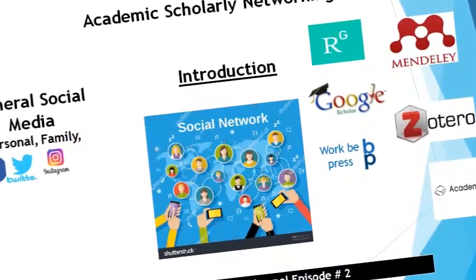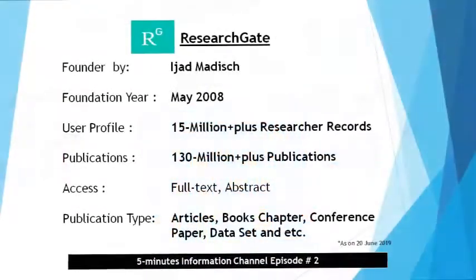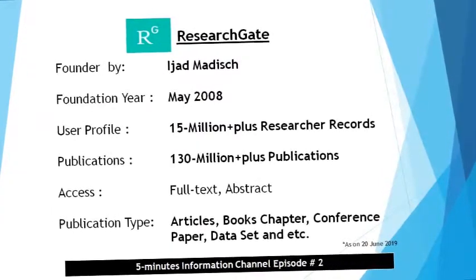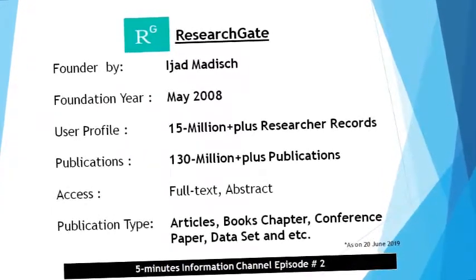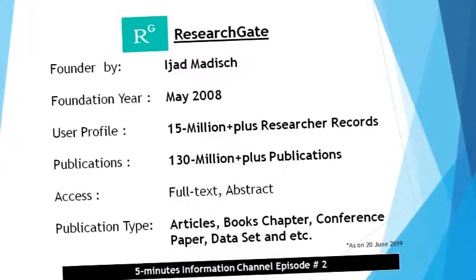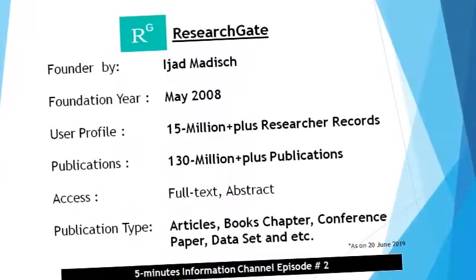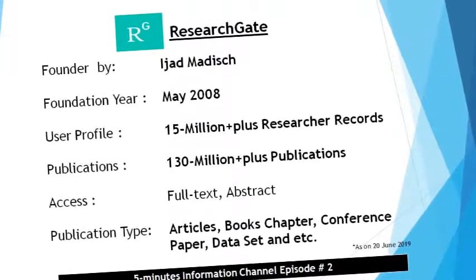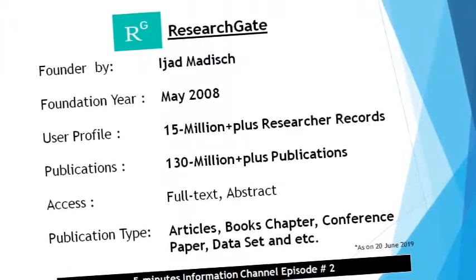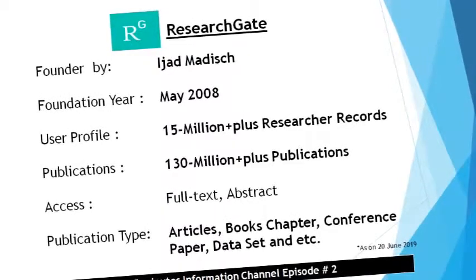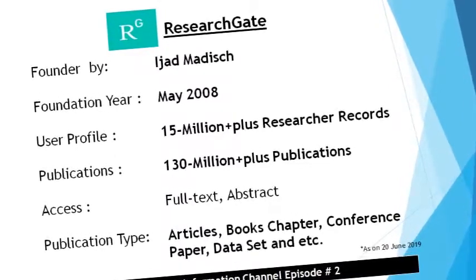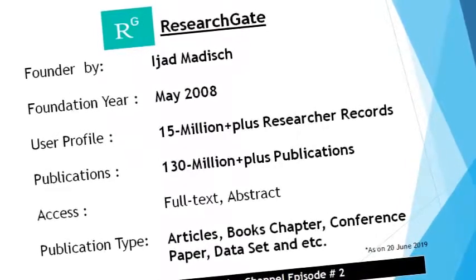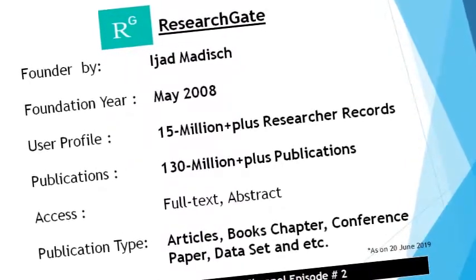In this video we will discuss the ResearchGate networking site, its characteristics and features. ResearchGate is a social networking site for scientists and researchers to share papers, ask and answer questions, and find collaboration work. It was founded in May 2008, and currently has 15 million scholar, researcher, and scientist profiles with access to 130 million publications.